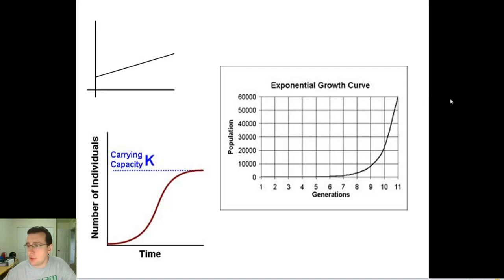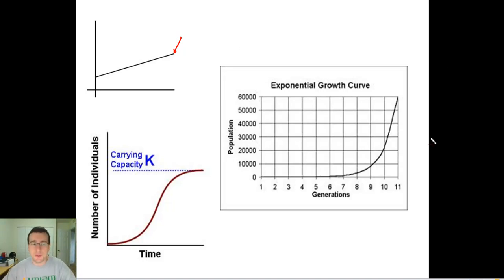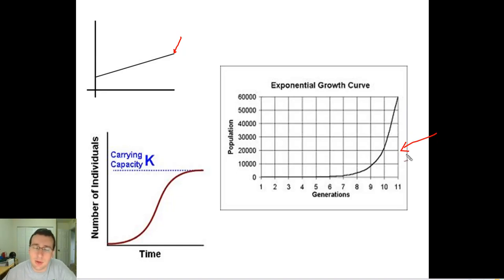In the last video, we talked about the three patterns of population growth that exist in populations. Very rarely you will see linear growth, where in every generation one more or equal value of people are going to be added. What you usually see would be something like exponential growth, where life tends to explode — but that's only going to happen if there's unlimited resources.